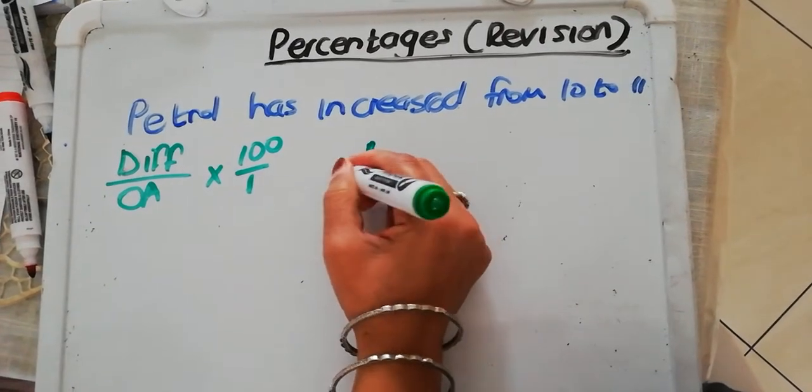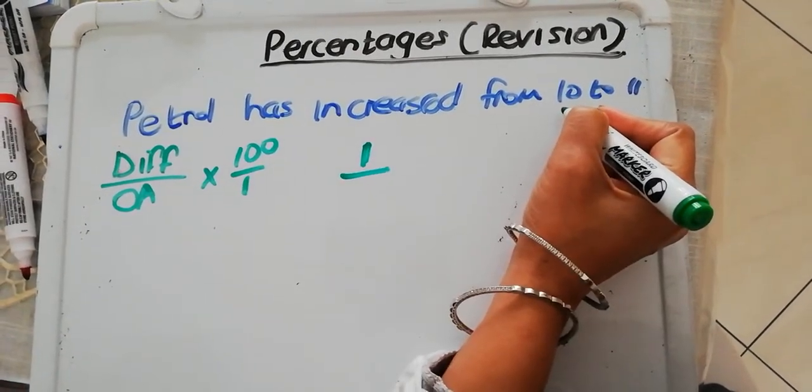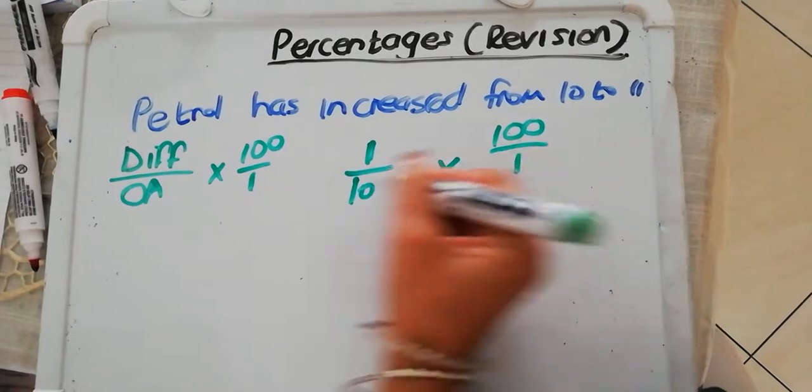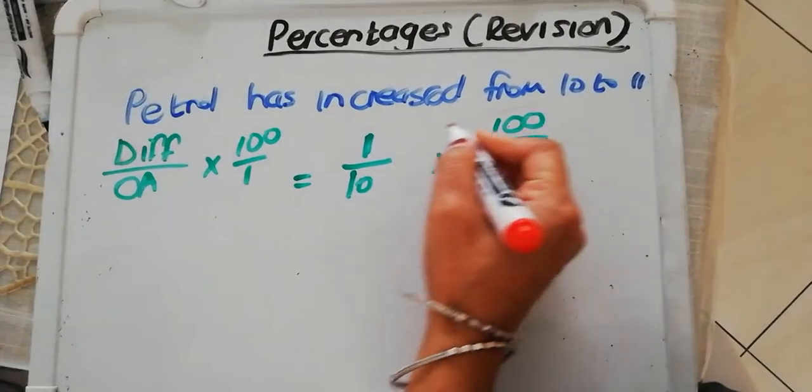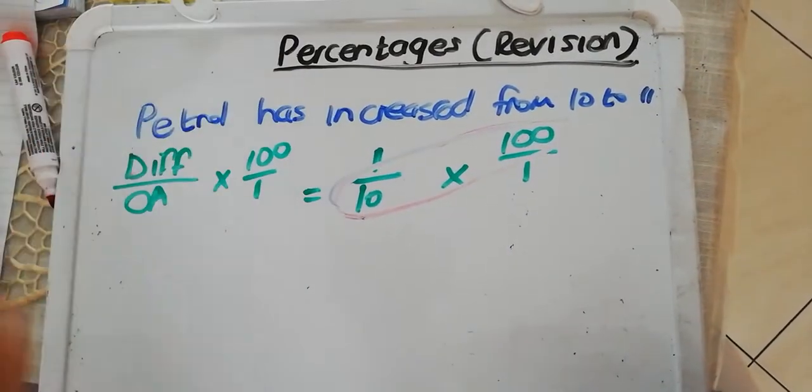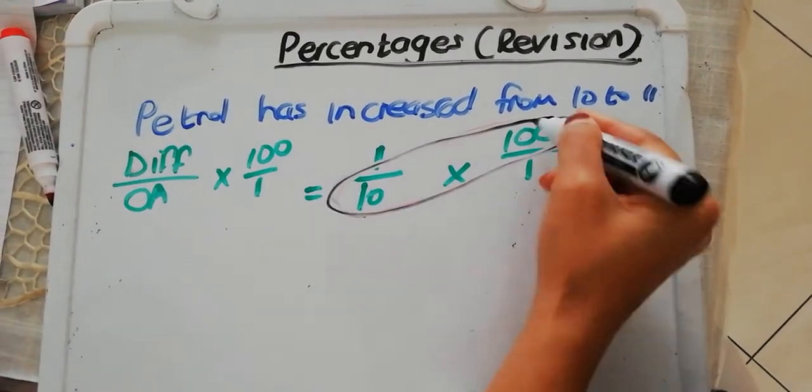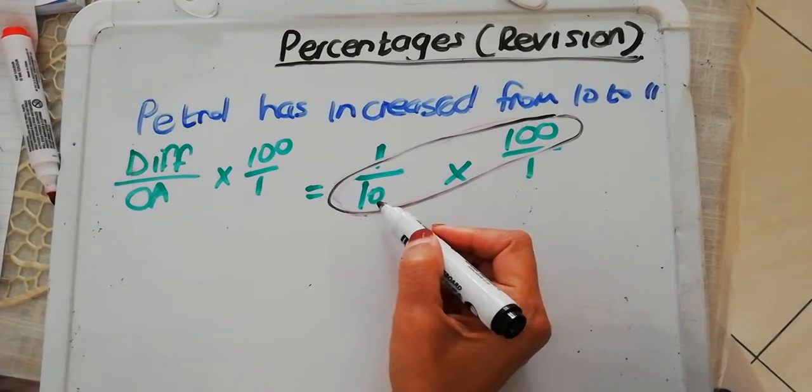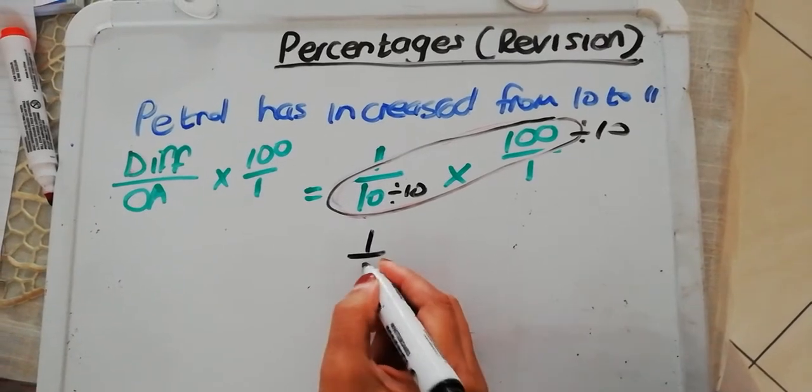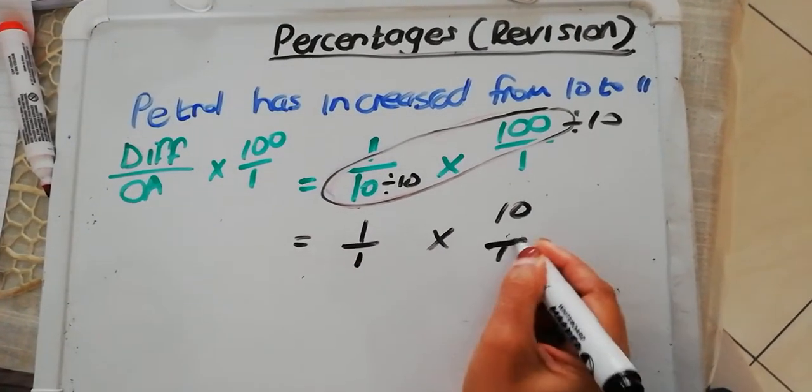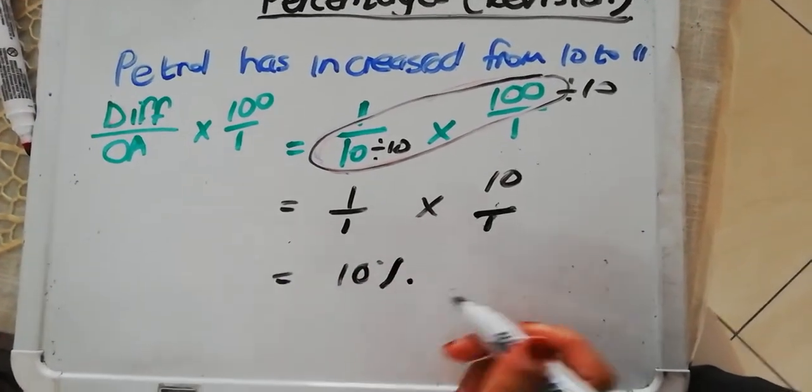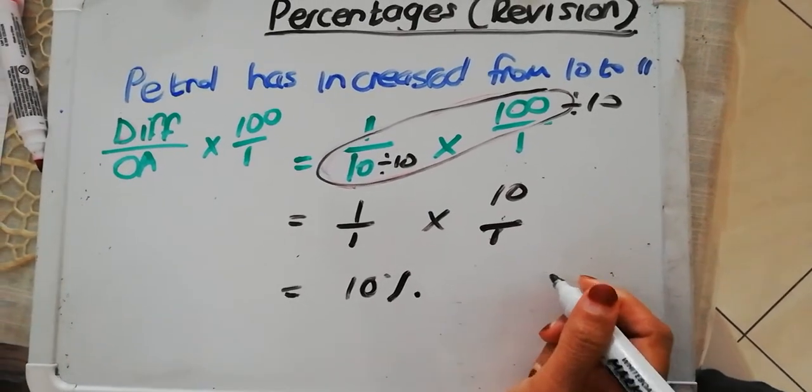What is the difference between 10 and 11 rand? It's 1 rand. That's the difference. What is the original amount? What was the price of the petrol, the original amount? It was 10 rand. 100 over 1. Why? Because I'm working out percentage. Then, I use my butterfly method. I use butterfly method and I say to myself, which multiple works for both? If I count in 10s, I will come to 100s. If I divide by 10 and I divide by 10, I'll get 1 over 1 times 10 over 1, which will give me 10%. So how much has the petrol increased by? The petrol has increased by 10%.